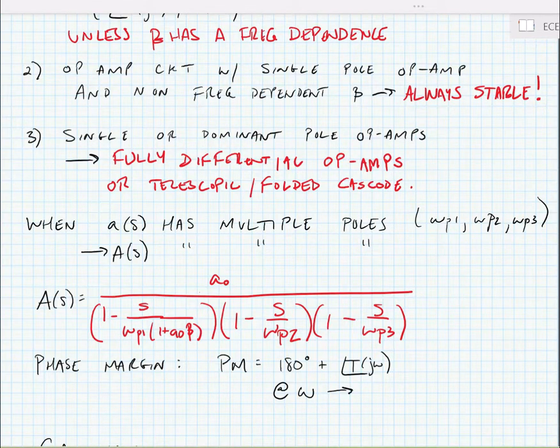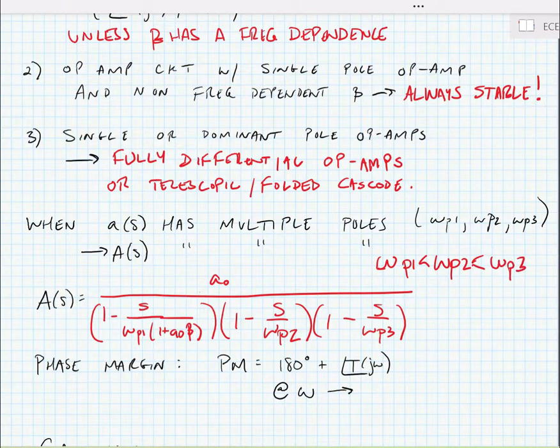Omega p1 times 1 plus a beta, omega p2 and omega p3. We'll generally say that omega p1 is less than omega p2 is less than omega p3. In this case, we have three poles. We can have a total of 270 degrees of phase shift because of this.